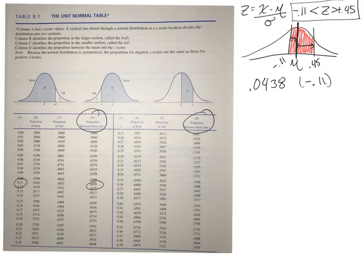And again, for the unit normal table, it doesn't matter if it's negative or positive. It understands that if negative 0.11 gives me a D column value of 0.0438, it's the same thing if it's going to be a positive.